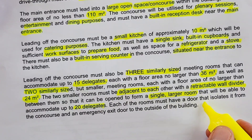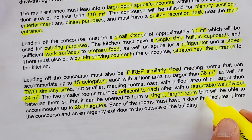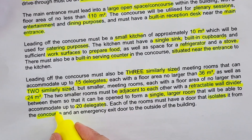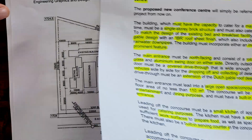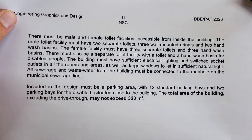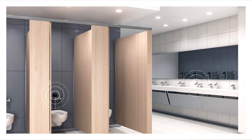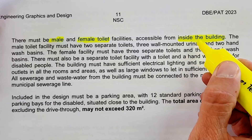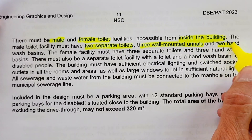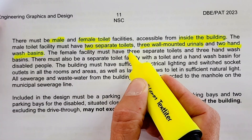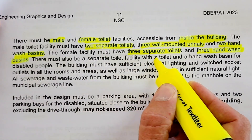Opening the two smaller rooms together creates a space of 48 square meters that can accommodate up to 20 delegates. Each room must have a door that isolates it from the concourse, and must still have an emergency exit door to the outside of the building. There must also be male and female toilet facilities accessible from inside the building. The male toilet must have two separate toilets, three wall-mounted urinals, and two hand-wash basins. The female facility must have three separate toilet facilities and three hand-wash basins.